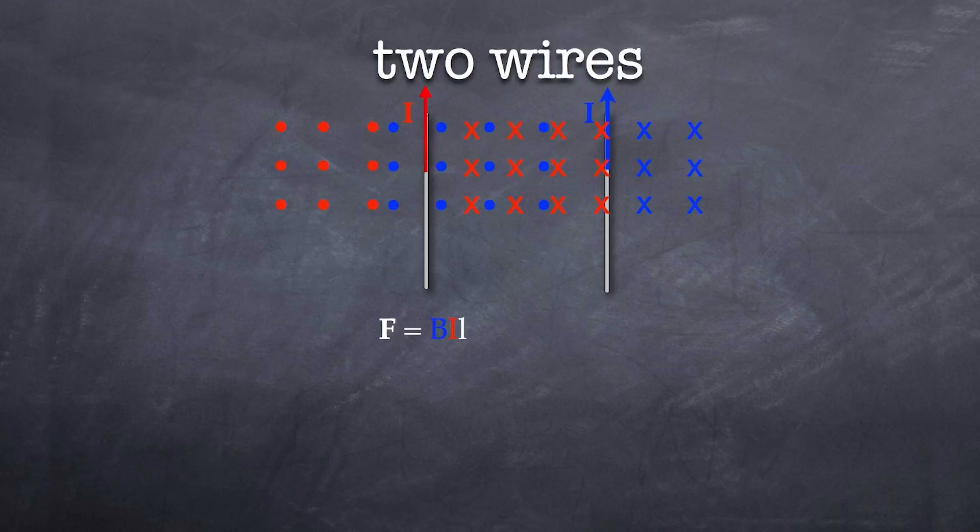But the strength of the magnetic field that the blue wire is generating is equal to kI over d, and k is a constant which is related to the permeability of free space.